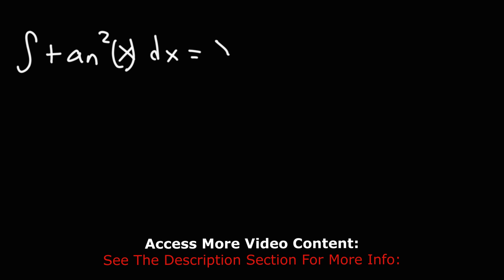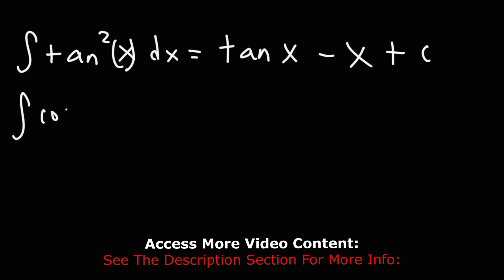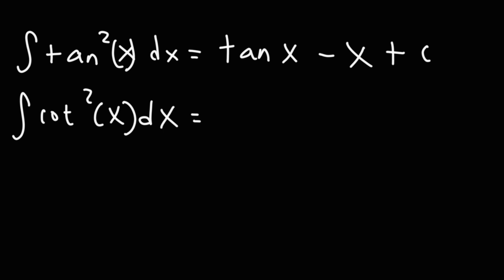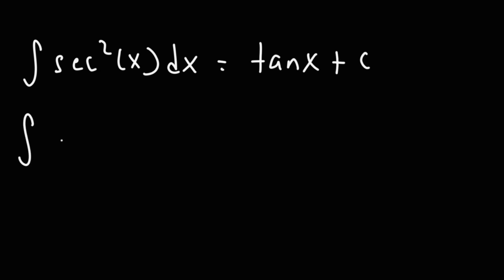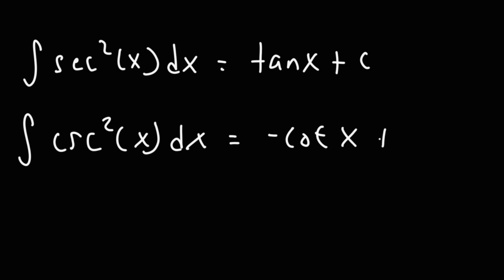Let's move on to tangent squared. The indefinite integral of tan squared x is tangent x minus x plus c. Likewise, the indefinite integral of cotangent squared is negative cotangent x minus x plus c. The indefinite integral of secant squared is tangent x plus c, and the indefinite integral of cosecant squared is negative cotangent x plus c, because the derivative of cotangent is negative cosecant squared — so the integral of cosecant squared will be negative cotangent.